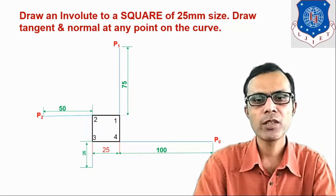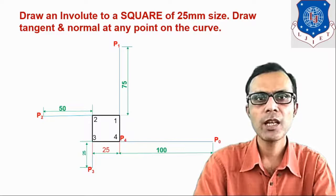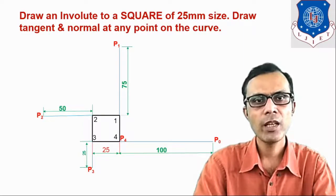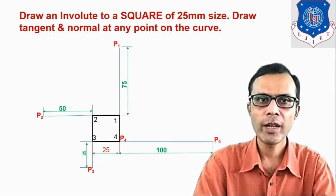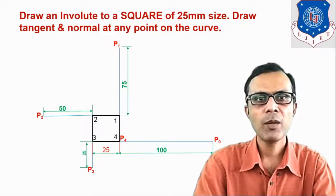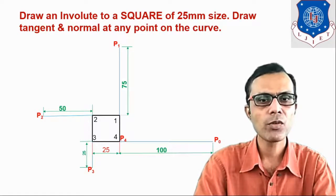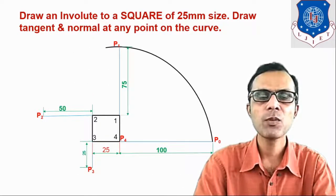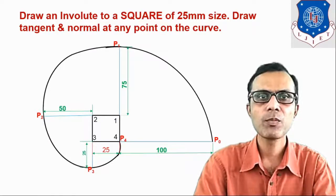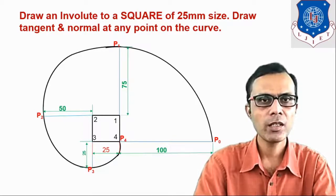Now we go to the points P0, P1, P2, P3, and P4. These are the different positions of the end point of the string when it is being wound on the square. We have to join all these points — that is the locus of the end point of the string, and that curve is known as involute. We will join all these points with a smooth freehand curve, then make it thick or dark, because the main part of this drawing is the involute.